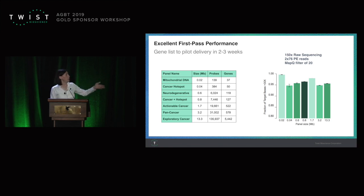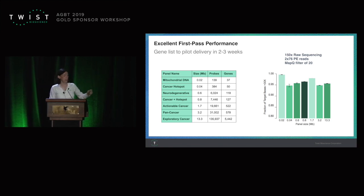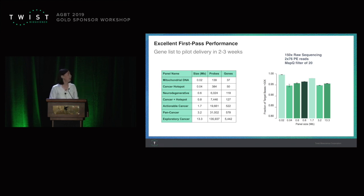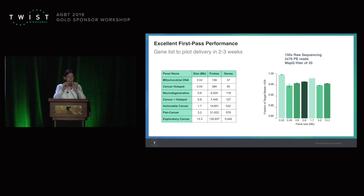Just to give you a quick summary, I have a table with almost 10 designs. At the top, it's a very small design with just 139 probes, and at the bottom it's a bigger design with 135,000 probes, and they all work well on the first try. For us, working well means that if you have 150x of raw sequencing filtered at Q20, more than 95% of your bases have 30x coverage. With as little sequencing as possible, you get coverage on all the bases you want — on the first try.